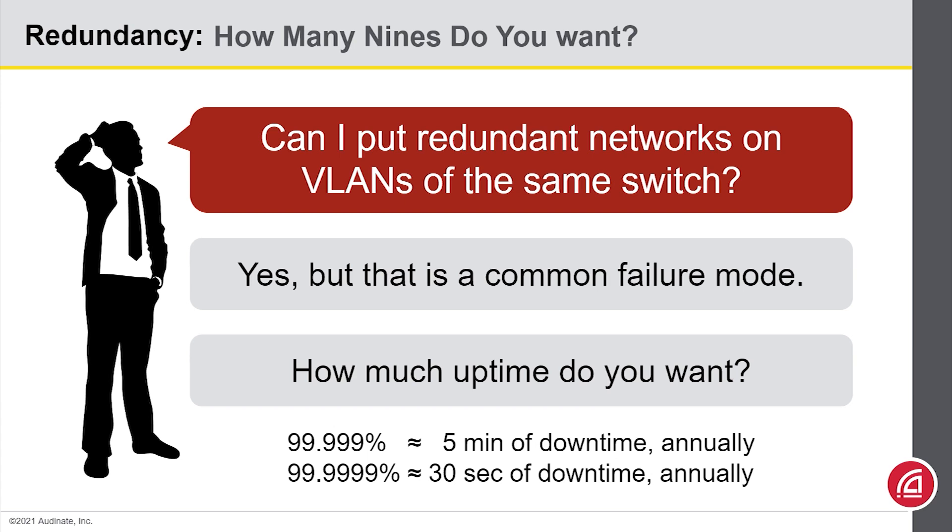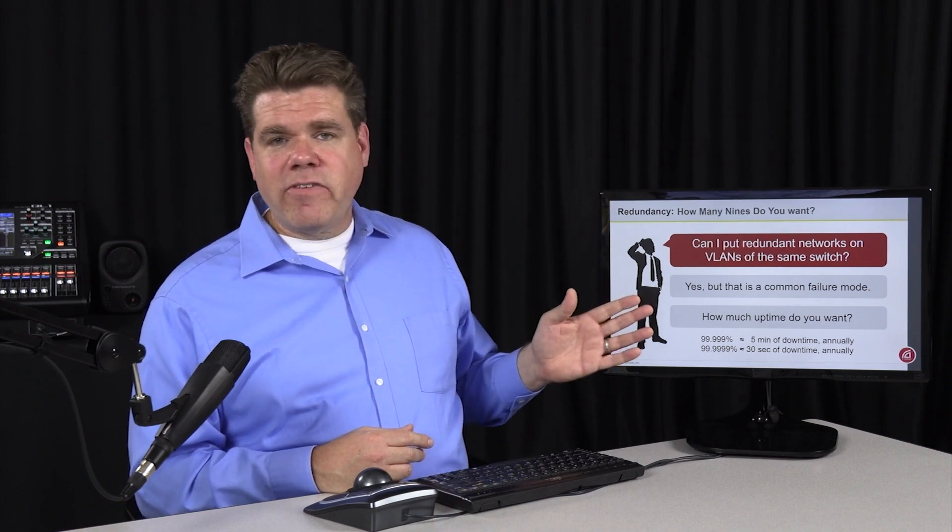Six nines means you have about 30 seconds of downtime annually. And this goes to just how reliable networks are. This amount of time probably doesn't represent a failure as much as it represents your scheduled maintenance.